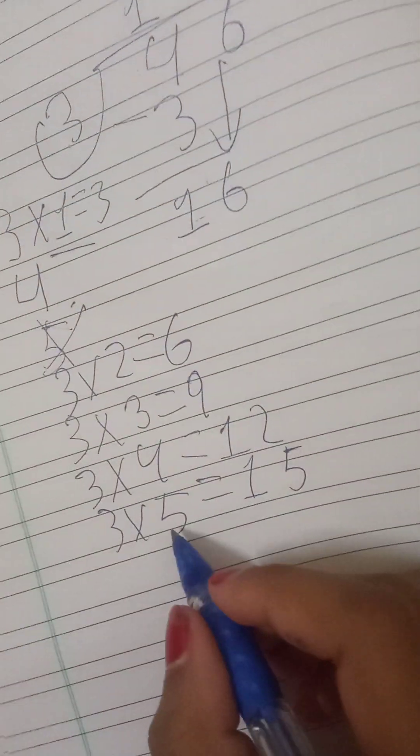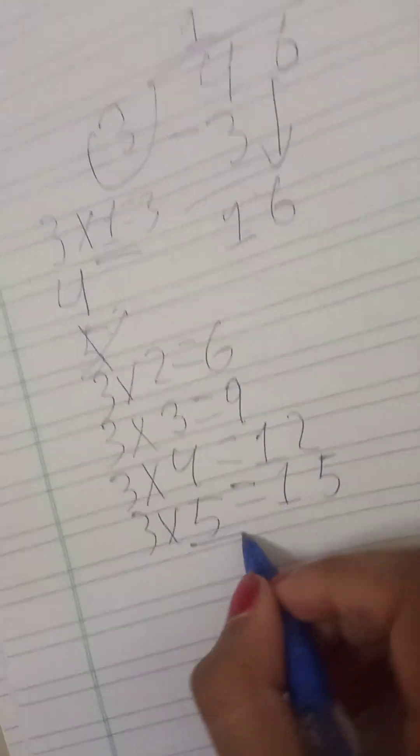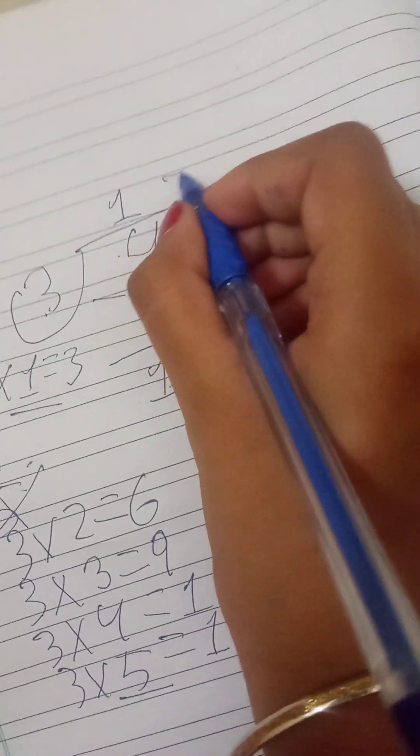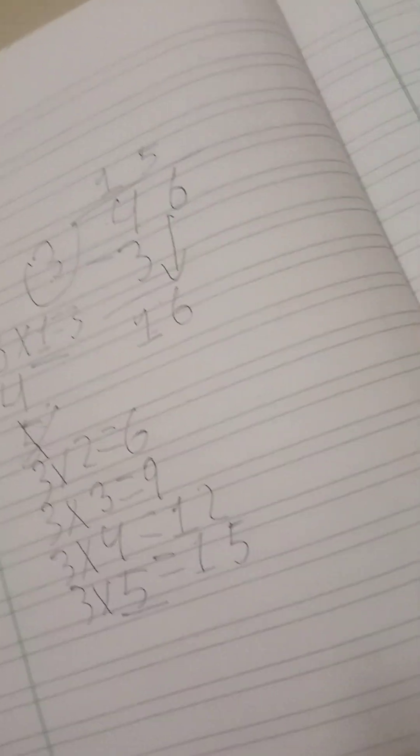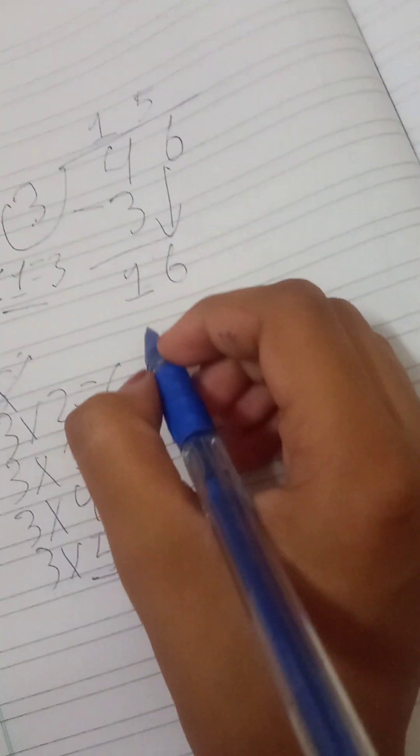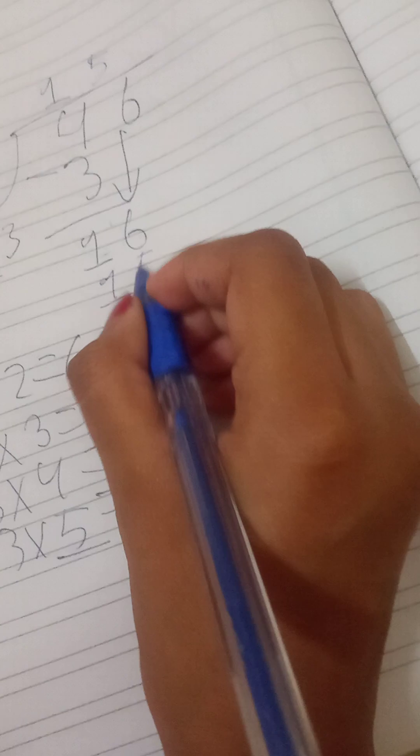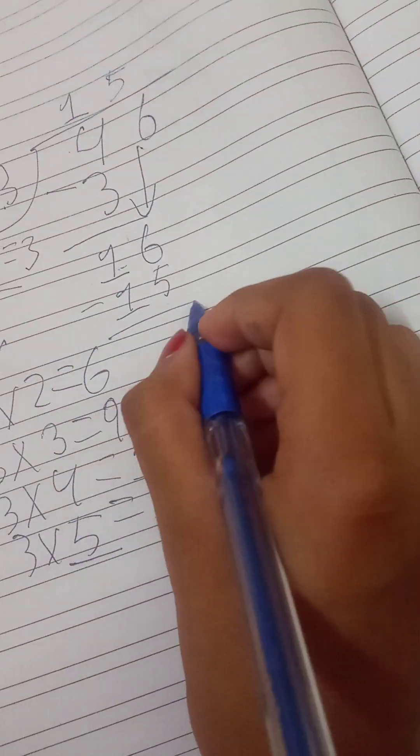Now, we have 3 multiplied by 5, so we have to write 5. Now, we minus it by 15. Equals 1.